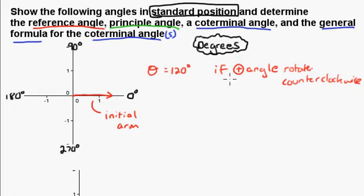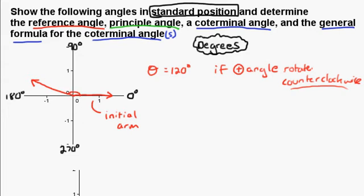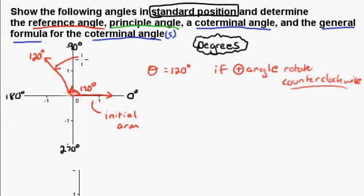So that's the initial arm. We're going to rotate it counterclockwise 120 degrees. Since we have 180 here and 90 there, we rotate past 90 and land at about 120 degrees. So the angle from the initial arm to the terminal arm is 120 degrees, and our terminal arm ends there.